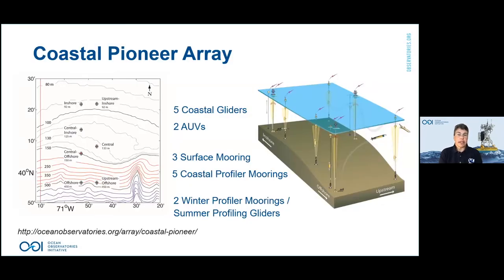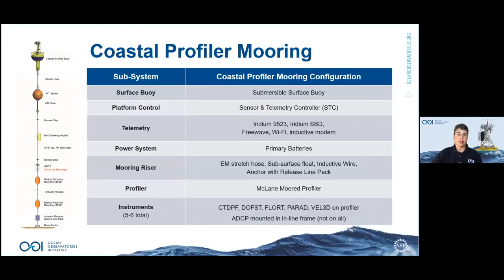The coastal Pioneer Array has seven sites: three surface moorings and five coastal profiling moorings. At the inshore and central sites, a profiling mooring is deployed in winter and profiling gliders are used in summer to better cover the water column. There are also five gliders and two AUVs operating in the vicinity.